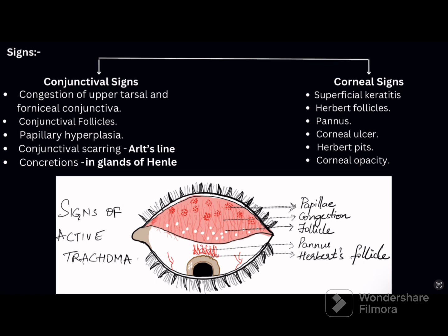Papillary hyperplasia gives a red and velvety appearance to the tarsal conjunctiva. Papillae are reddish flat-topped raised areas. They consist of a central core of numerous dilated blood vessels, peripherally surrounded by lymphocytes, covered by hypertrophic epithelium. Conjunctival scarring can be irregular, star-shaped, or linear. A linear scar in sulcus subtarsalis is called Arlt's line.